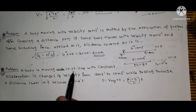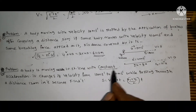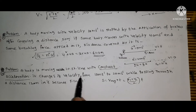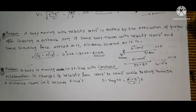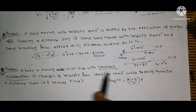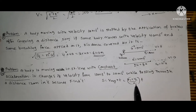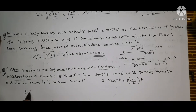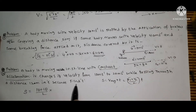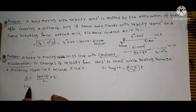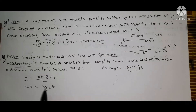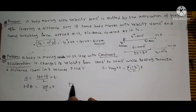Problem: a body with constant acceleration changes velocity from 10 m/s to 20 m/s while passing through 120 meters in t seconds. Find t. For constant acceleration, distance equals average velocity times time: s equals (v1 plus v2) divided by 2 times t. So 120 equals (10 plus 20) divided by 2 times t, which gives 120 equals 15t, so t equals 8 seconds.